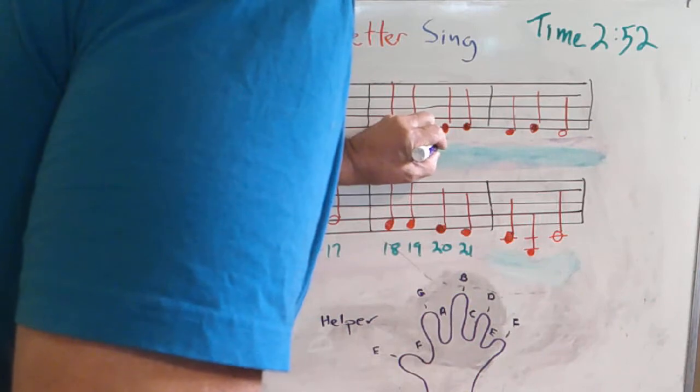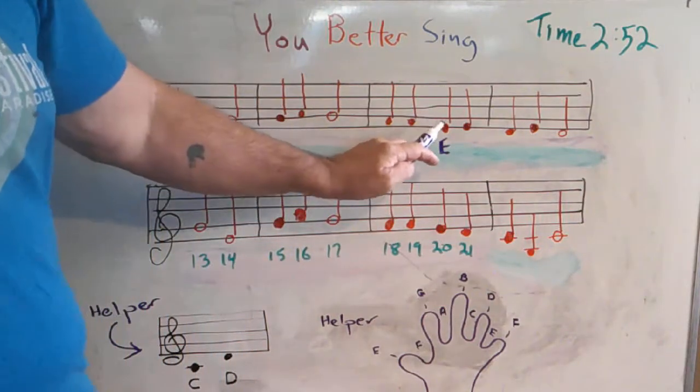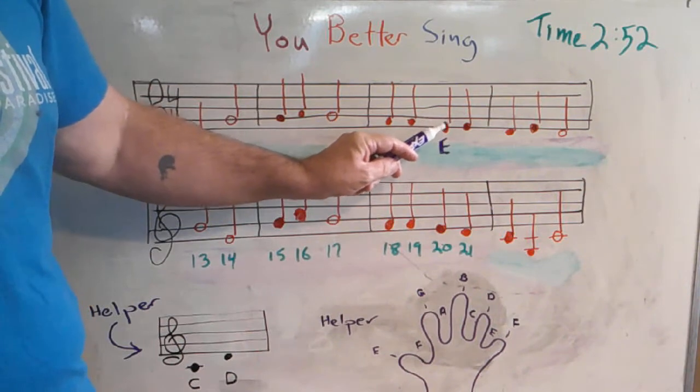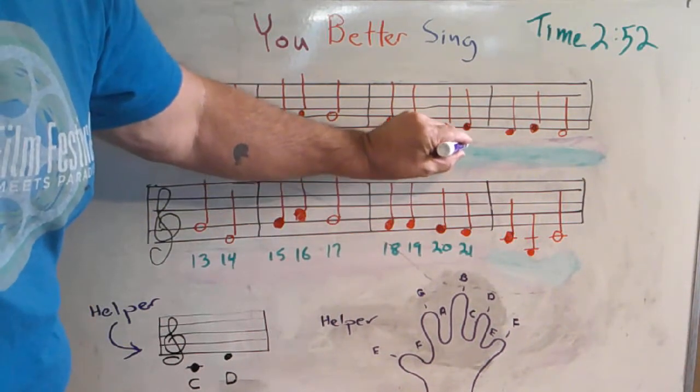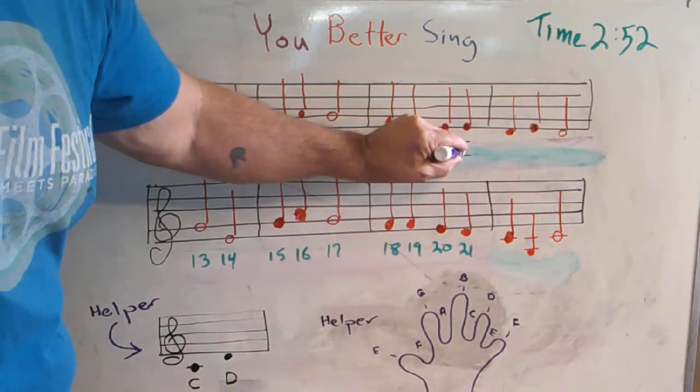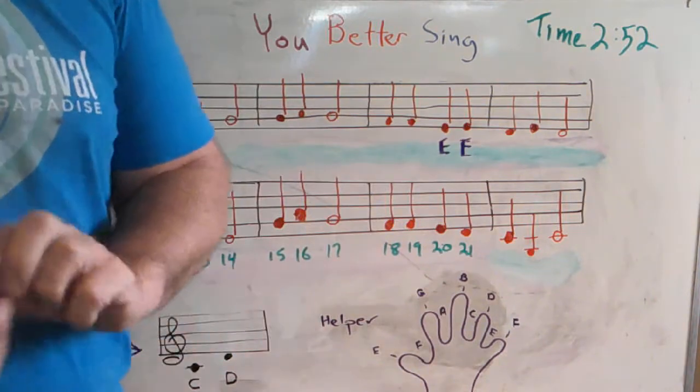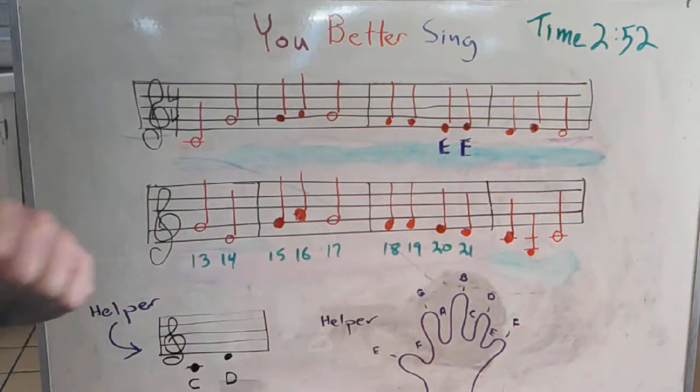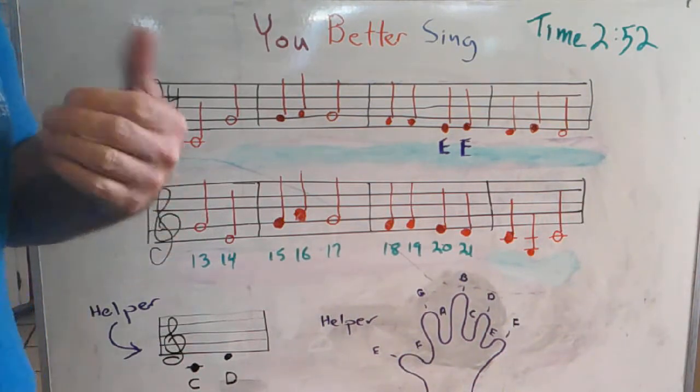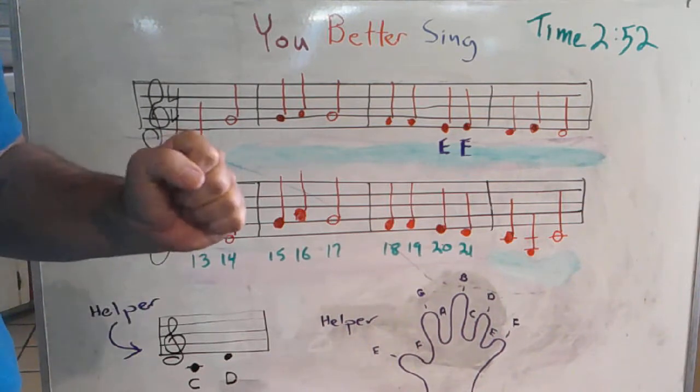Now look at this. This note and this note, are they on the same line? Yes they are. So this will also be an E. Now if you watched all three videos, you might be saying, 'Wait a minute Mr. John, that's not an E, that's a Me.' Well they're both correct.